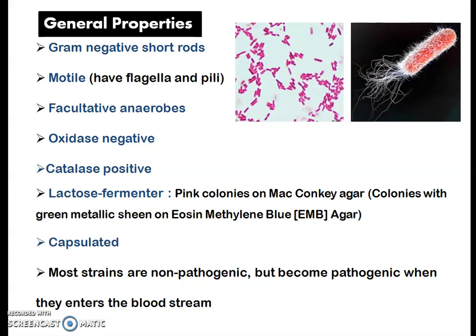E. coli are lactose fermenters, meaning they can utilize lactose and form pink colonies when grown on MacConkey agar. E. coli can also be selectively grown on eosin methylene blue agar, otherwise known as EMB agar, where the colonies will have a green metallic sheen color.